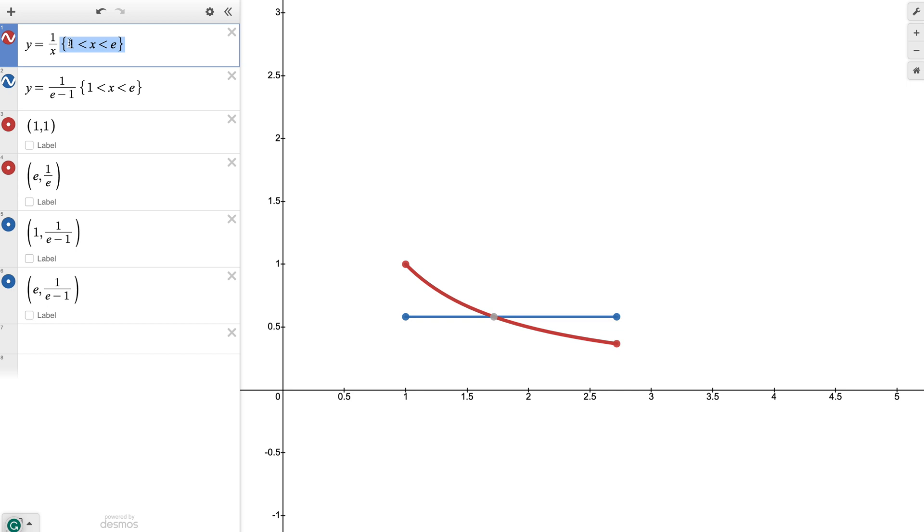If we remove that you can see the more recognizable 1 over x function. But we'll leave in this restriction between 1 and e because that way we can talk about just this interval that we're interested in.